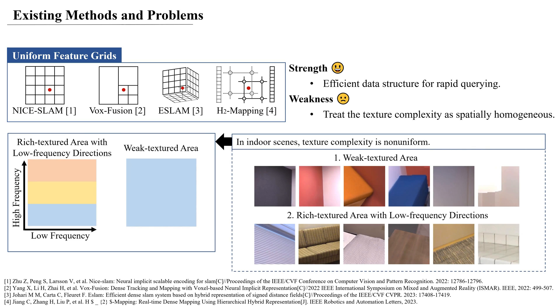For instance, walls commonly comprise weak-textured regions, while blinds, grout lines, and wooden furniture often exhibit stripes with both high and low-frequency directions.